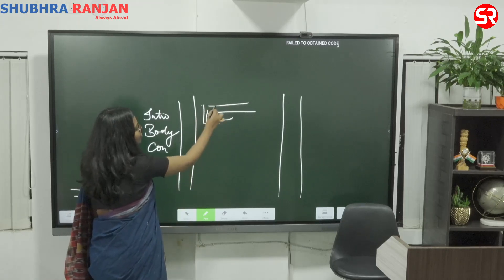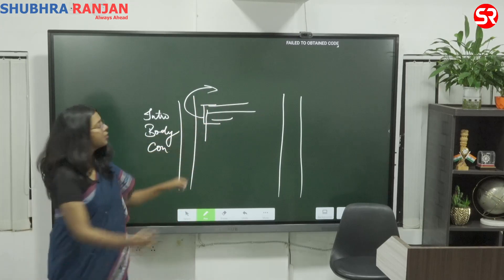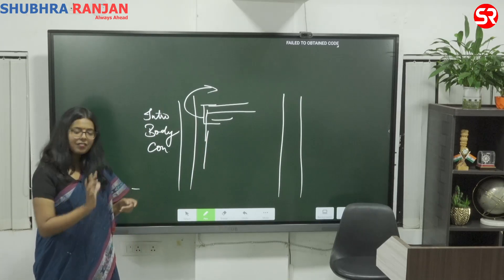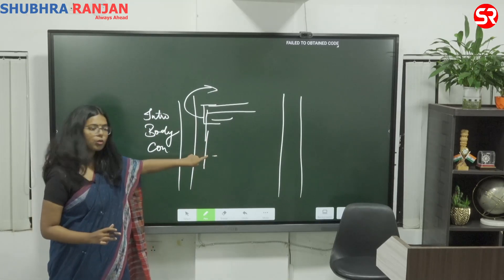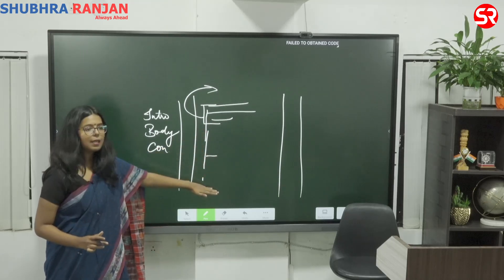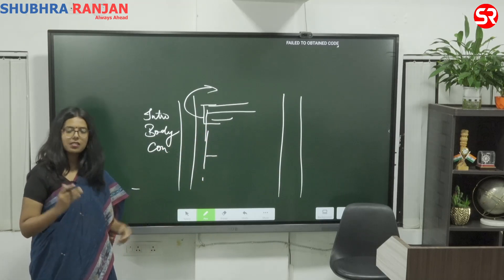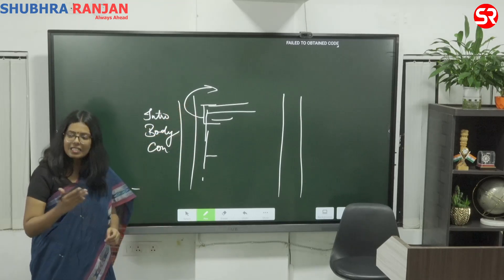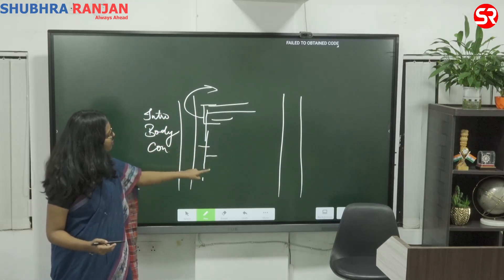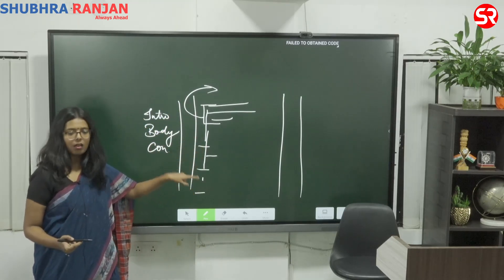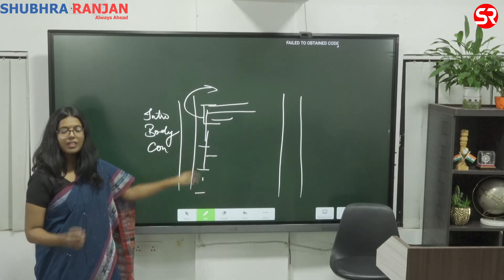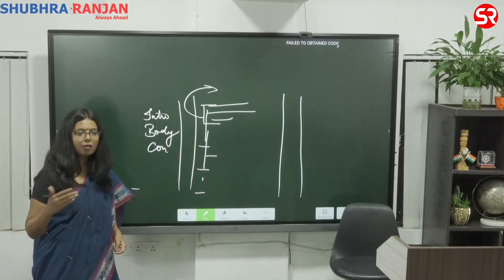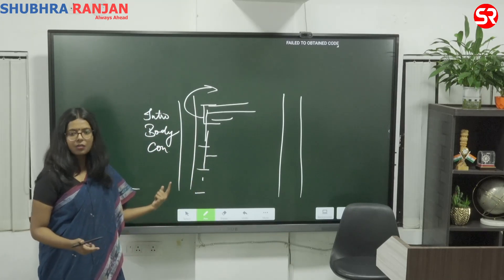You will write your introduction first, which will address the question. Then you will write the body part. Here you need to be careful about how many parts the question has. If they are asking two parts, you have to address both of them — you should not write too much on the first part and too little on the second. Before framing the answer, be very clear about what exactly they are asking. Then you will conclude your answer in two to three lines, ending on a positive note.